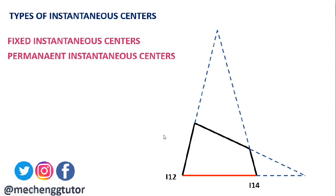The second type is the permanent instantaneous center. These are instantaneous centers that move when the mechanism moves, but the joints associated with them remain permanent. For the four-bar mechanism, I₂₃ and I₃₄ are permanent instantaneous centers — they move as the mechanism moves, but the joint of links 2 & 3 and the joint of links 3 & 4 remain fixed respectively.